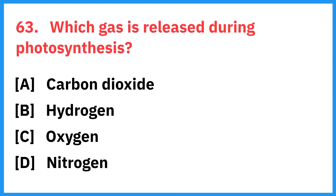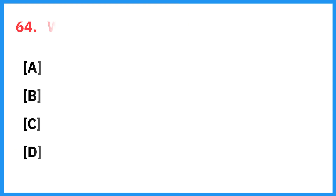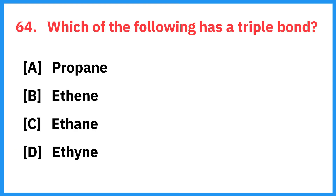Which gas is released during photosynthesis? Answer: oxygen. Which of the following has a triple bond? Correct answer is ethine.